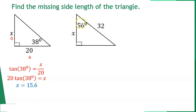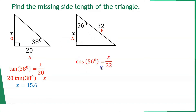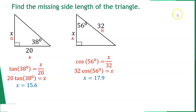Another example: 56 degrees is the angle, 32 is the hypotenuse, and x is adjacent. Using cosine: cos(56°) = x/32. Cross-multiplying gives x = 32 × cos(56°), so x ≈ 17.9.